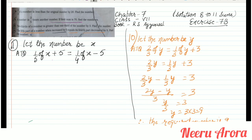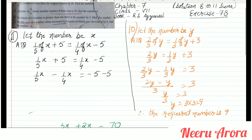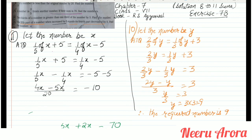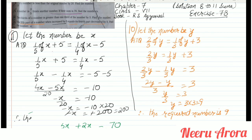So 1/5 x plus 5 equals 1/4 x minus 5. Separating variables and constants: 1/5 x minus 1/4 x equals minus 5 minus 5. Taking LCM as 20: 4x minus 5x equals minus 10, giving minus x by 20 equals minus 10. So minus x equals minus 200. The minuses cancel, giving x equals 200. Therefore the required number is 200. Thank you.